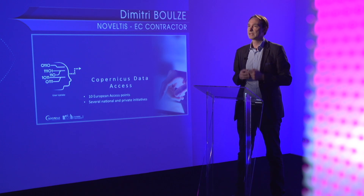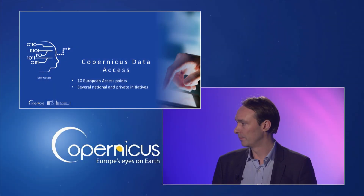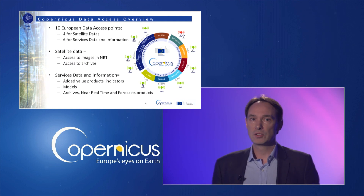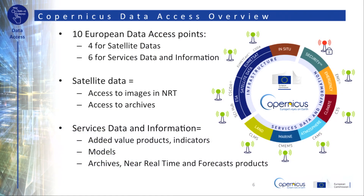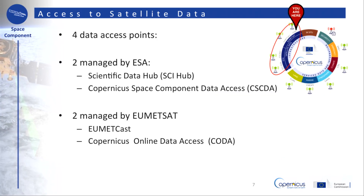In the following slides I will describe the different data access points. This slide provides you with an overview of all the Copernicus access points — there are 10 of them. Four are providing access to the satellite data, with access to images in near real-time or to the past archives, and six of them are providing access to added-value products, indicators or forecasts. Let's start with the access to satellite data.